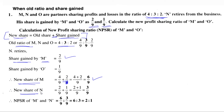Next we find the new share of O. The old share of O is 2/9, and the share gained by O from N is 1/9. So we write: 2/9 + 1/9. Since the denominators are the same, we apply the same method — just ignore one repeated denominator when adding.